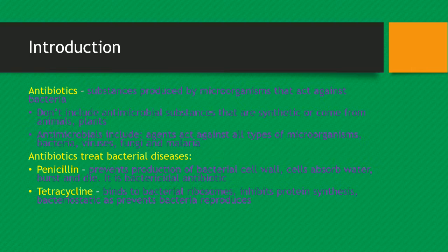Let's start with a simple introduction. Antibiotics are substances produced by microorganisms that act against bacteria. They do not include antimicrobial substances that are synthetic or come from animals and plants. Antimicrobial substances include agents that act against all types of microorganisms such as bacteria, viruses, fungi and malaria, while antibiotics are just against bacteria.